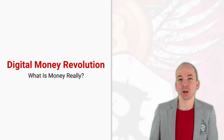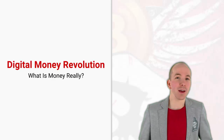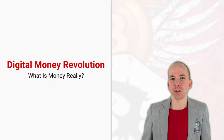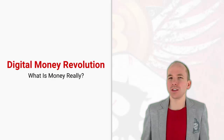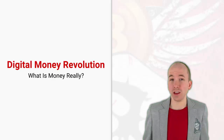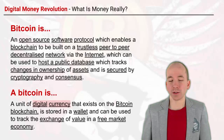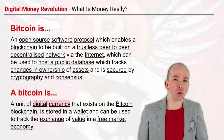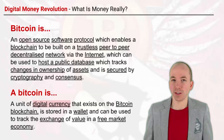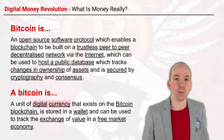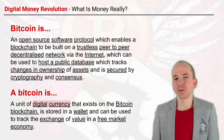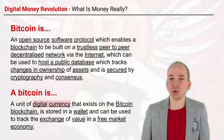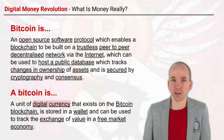Hi there, welcome back to the Digital Money Revolution. I'm your host Chris Coney. In this lesson we're going to go into the question of what is money really. If we go back to our definition here, we've now moved on to Bitcoin with a small b, which is the currency that runs on the Bitcoin network, and the first part of my definition is that a Bitcoin is a unit of digital currency.